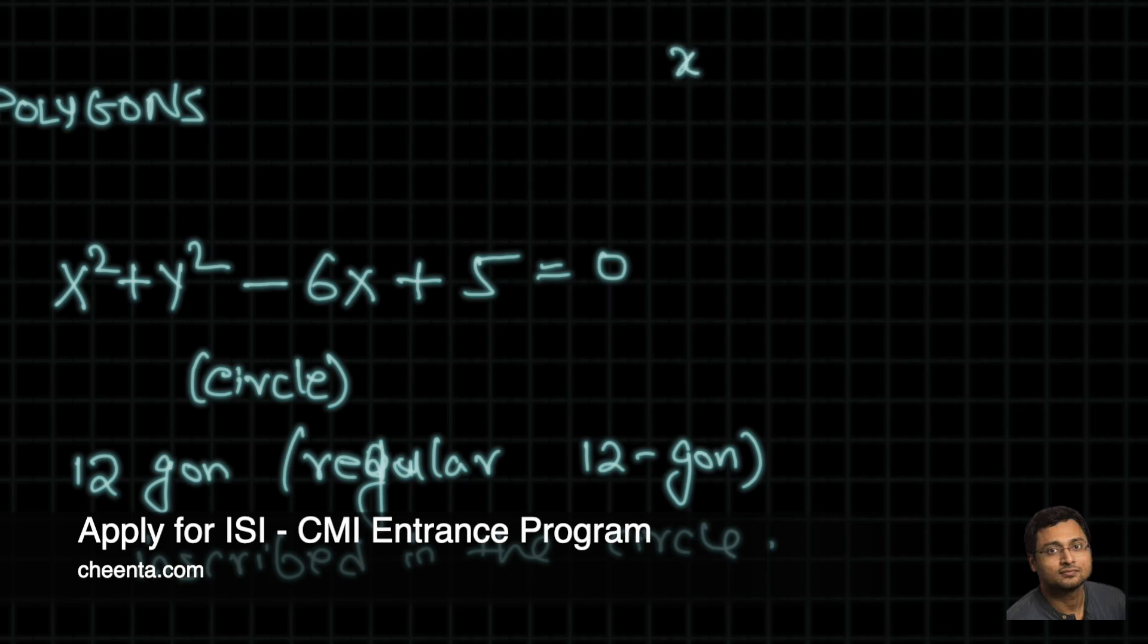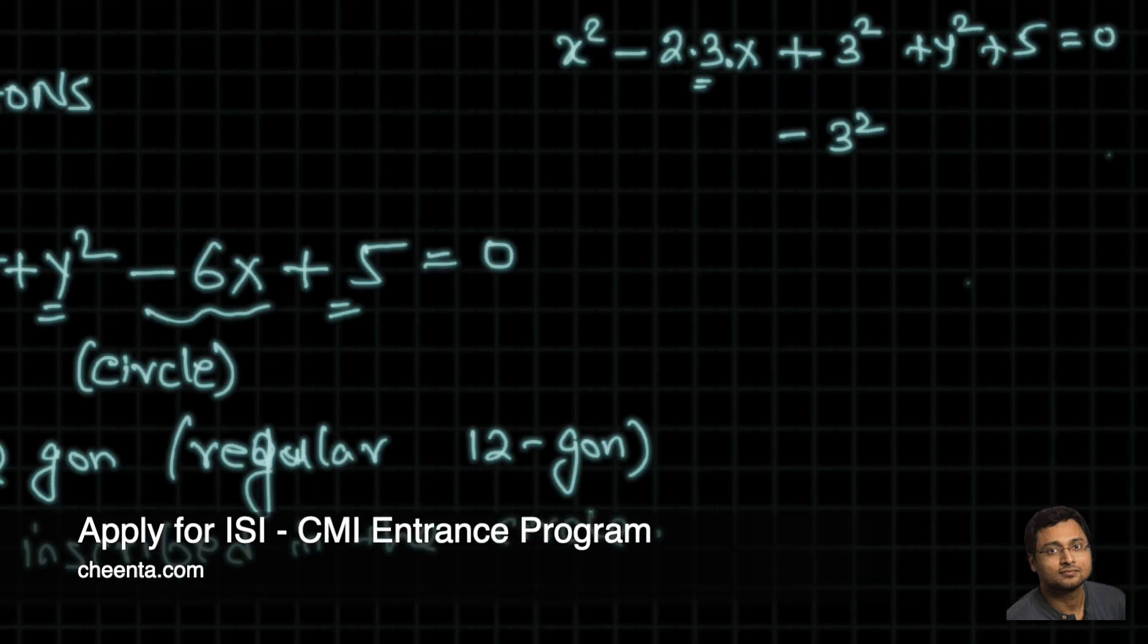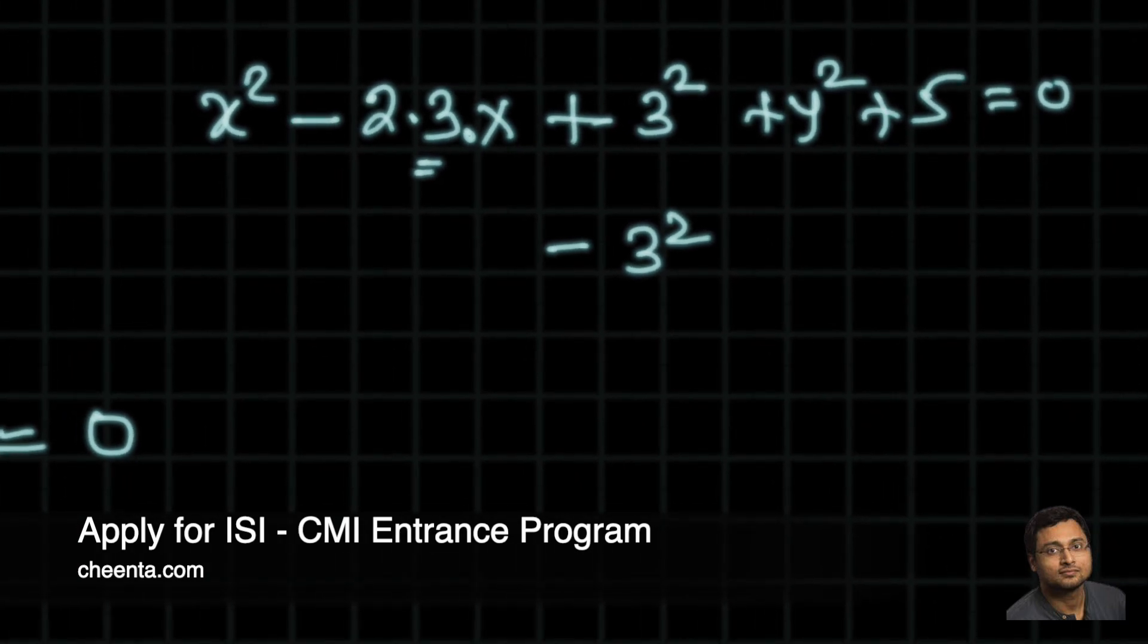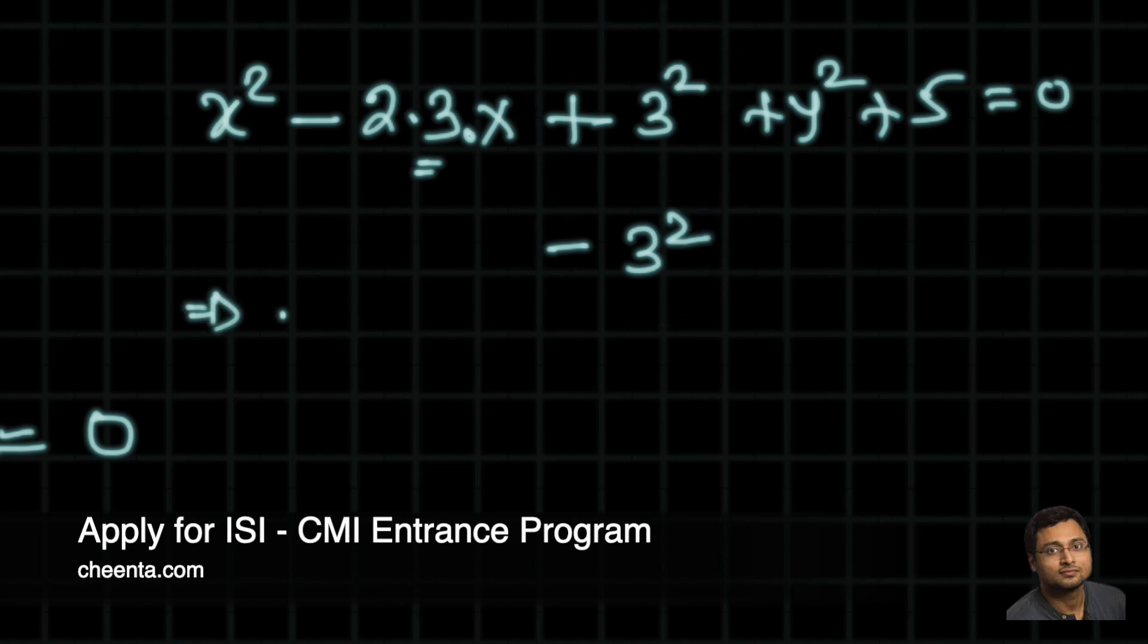We will rewrite it in a standard form. So x² minus, let's write -6x as 2 times 3 times x, plus let's make 3², and let's subtract 3² because we don't have that. We also have y² and 5, so let's add y² and let's add 5, equals 0. We did not really change anything about the circle's equation. We introduced a 3², we subtracted a 3². This turns out to be (x - 3)² + y² = 4.